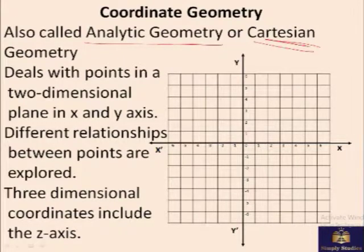It's also called analytic geometry or Cartesian geometry. Coordinate geometry deals with points in a two-dimensional plane with X and Y axis. The horizontal axis is the X axis and the vertical axis is the Y axis.